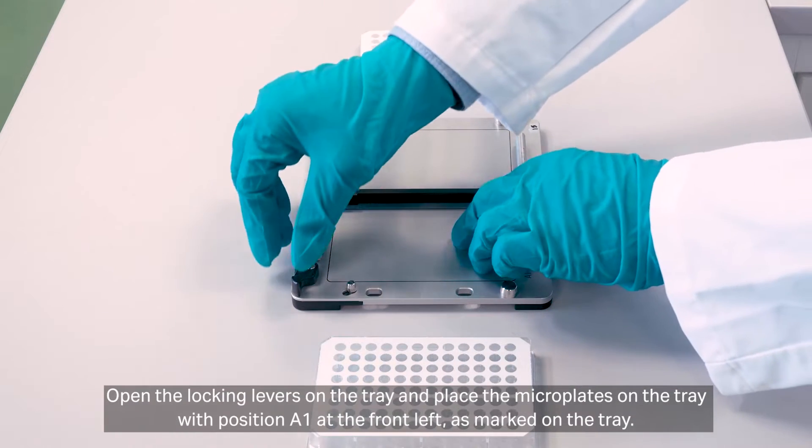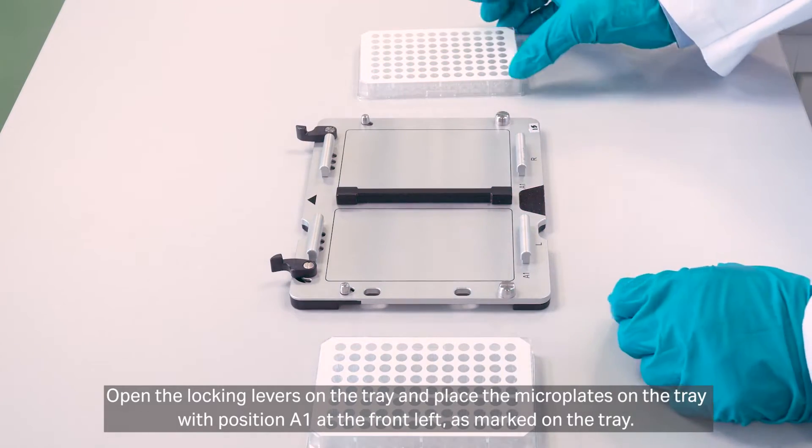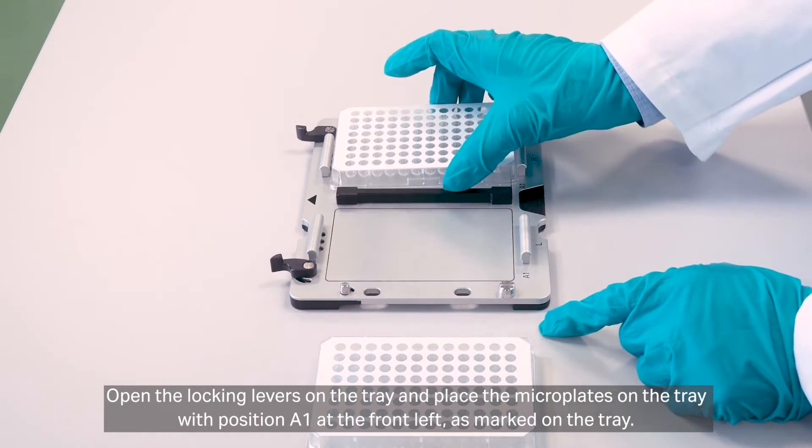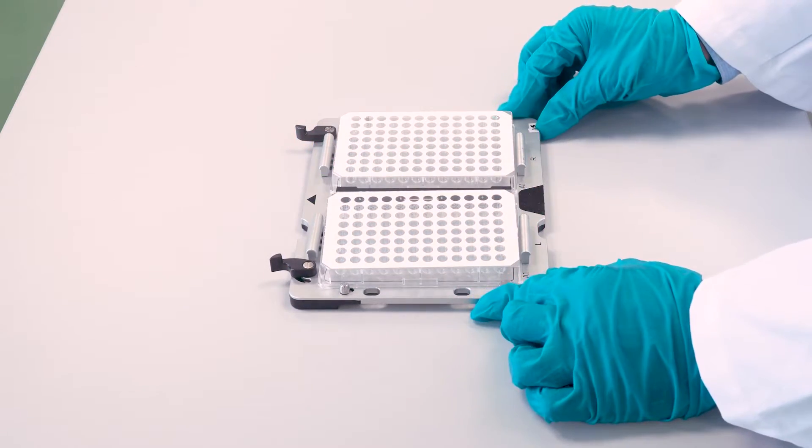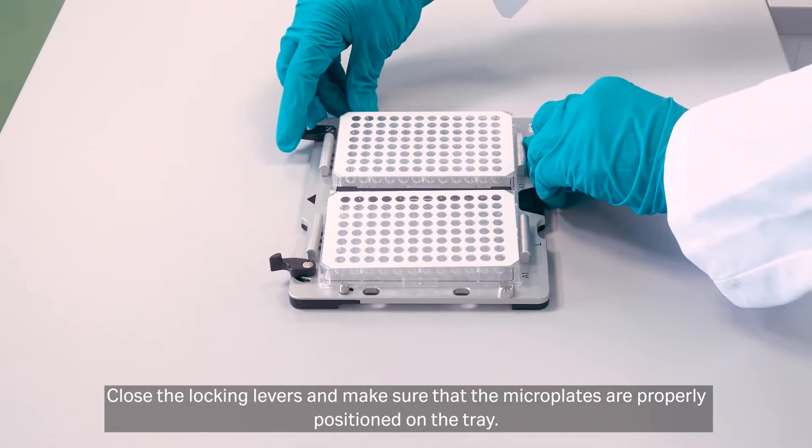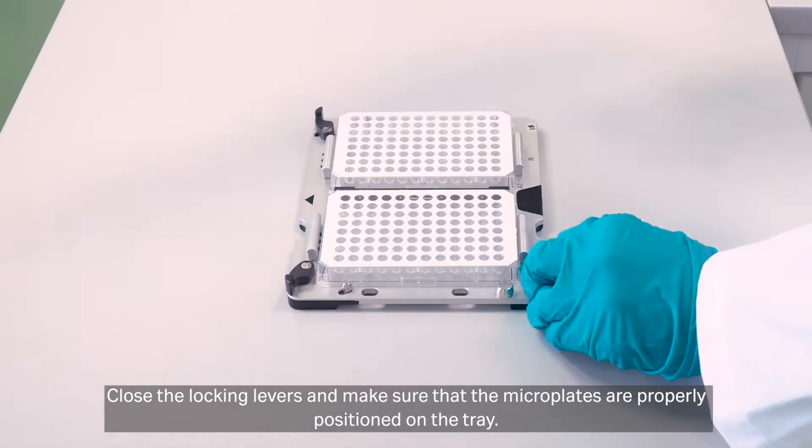Open the locking levers on the tray and place the microplates on the tray with position A-1 at the front left, as marked on the tray. Close the locking levers and make sure that the microplates are properly positioned on the tray.